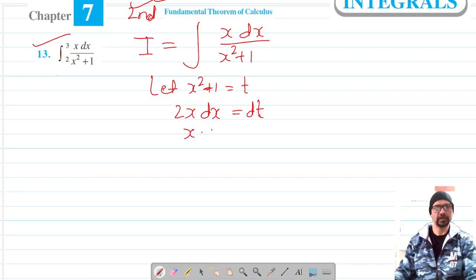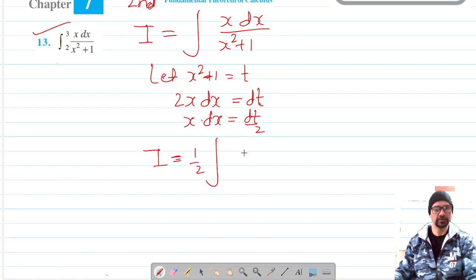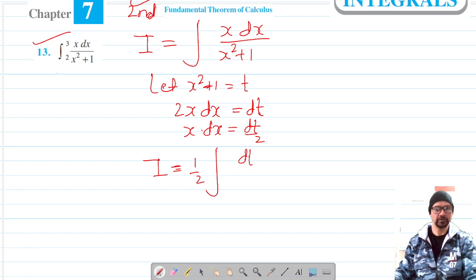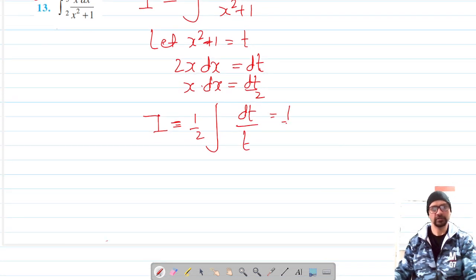which gives us x dx equals dt by 2. So our integral in terms of t is: x dx is dt upon 2, and x squared plus 1 is t, so this is